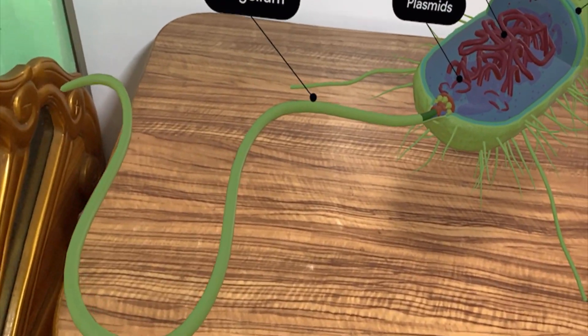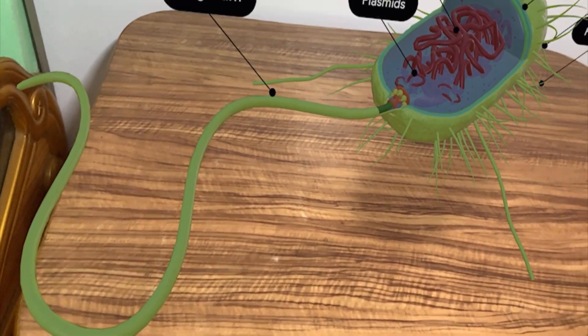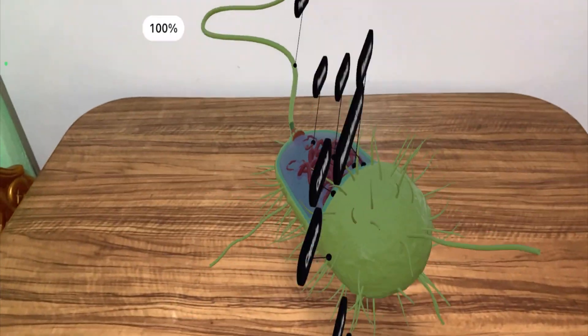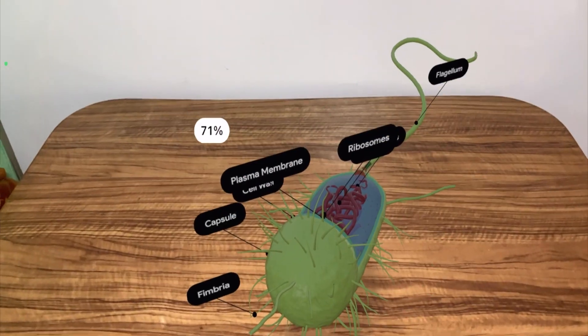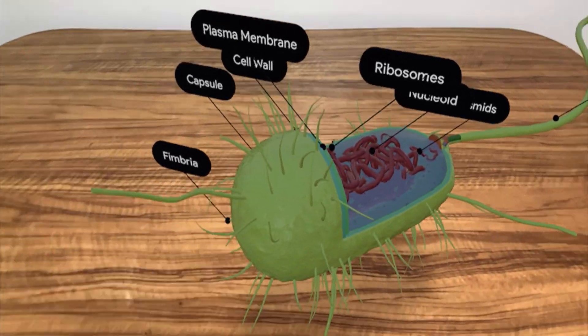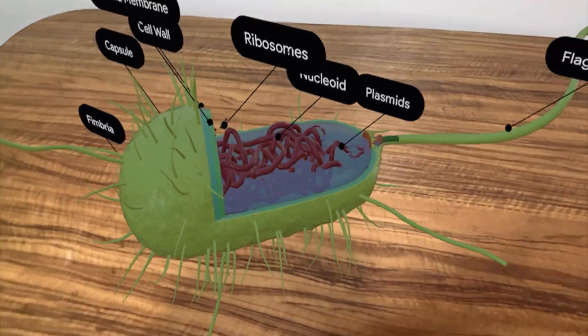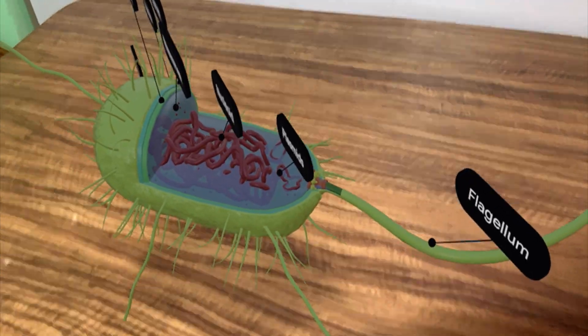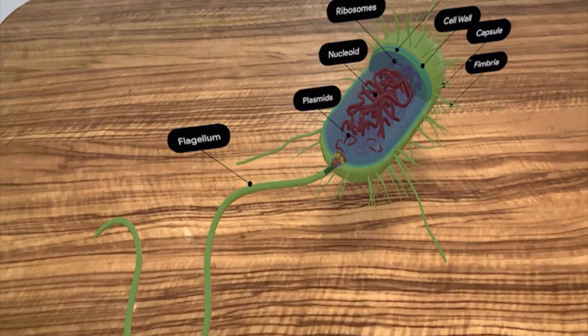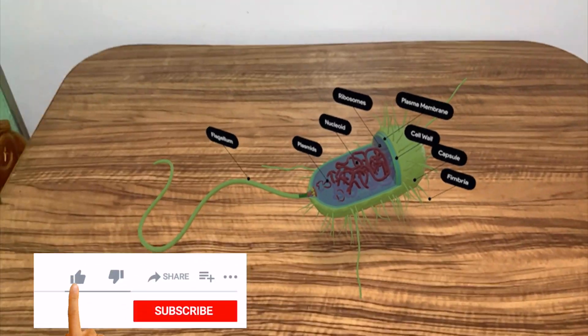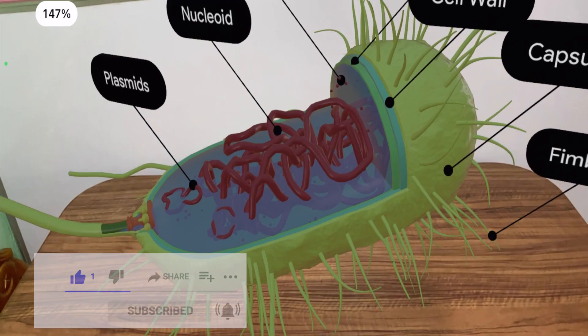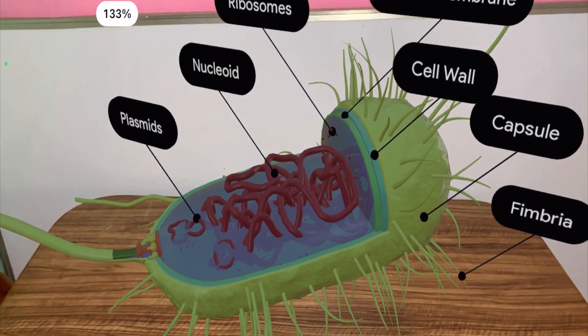You can see how the structure is visible over here. Here is the flagella or flagellum and you can see you can rotate the structure. You can zoom in and out, so you can make it bigger or smaller using your fingers to zoom. Then here you can see I am rotating the structure and making it smaller so that you can visualize the entire bacterial cell or the prokaryotic cell.